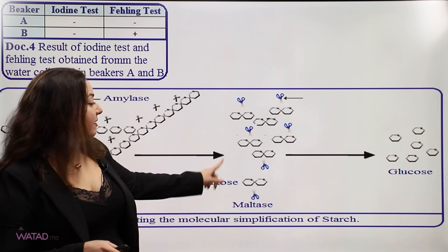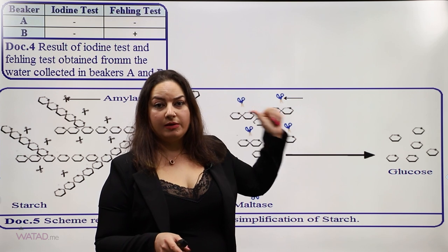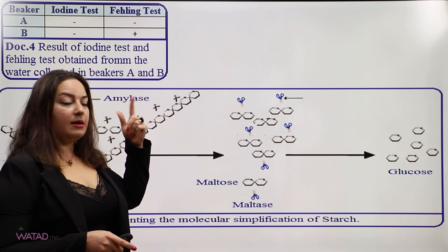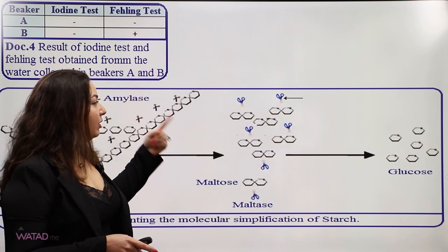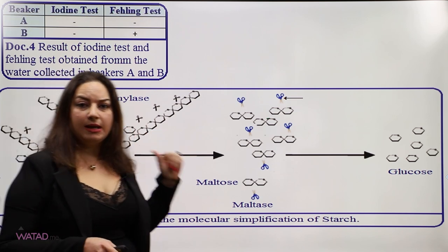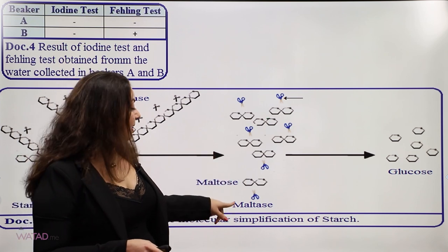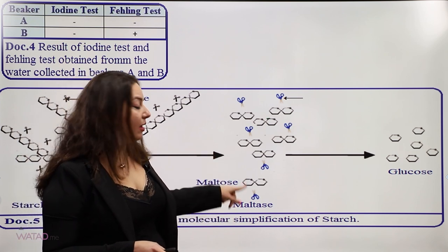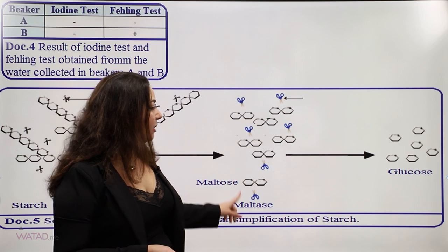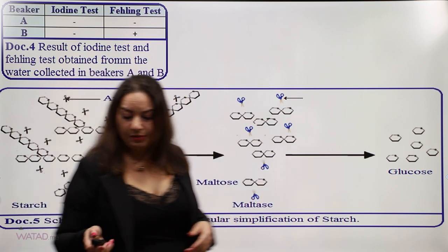Under the action of a second enzyme called maltase, present in the intestinal juices, maltose is changed into an even simpler molecule — a monosaccharide called glucose. So the pathway is: starch is broken down by amylase into maltose, and then maltase converts maltose into glucose.